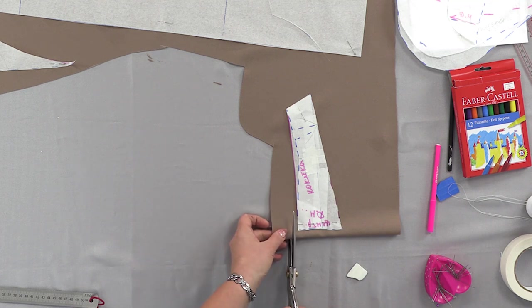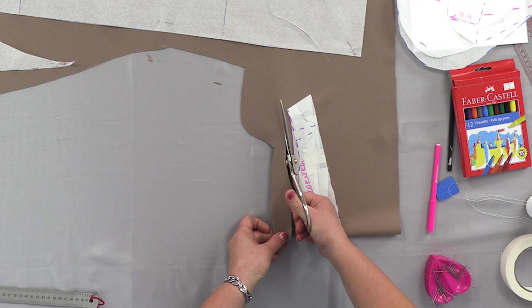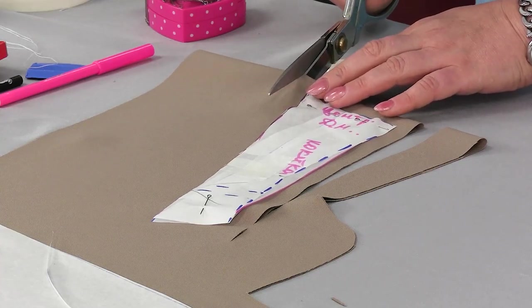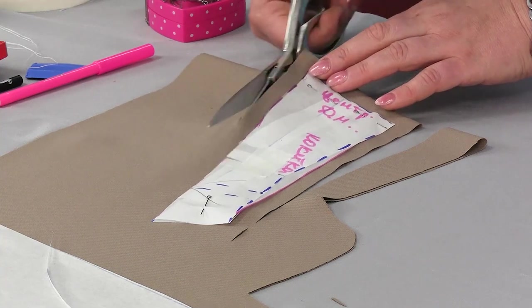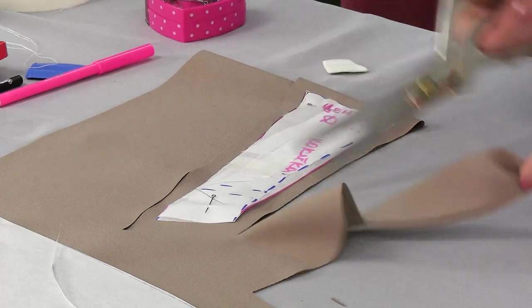Now for the yoke. Leave a centimeter at the top. Also at the bottom. And one and a half at the side.